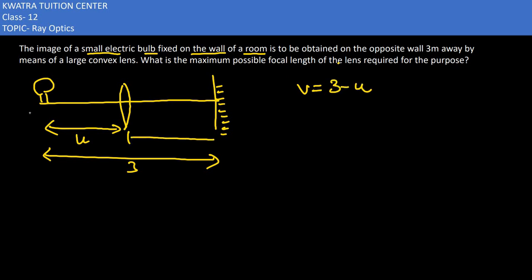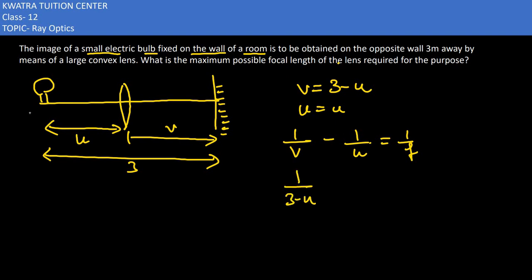The lens formula is: 1/v minus 1/u equals 1/f. Now we substitute: v equals 3 minus u, and u becomes minus u because it is on the negative side.